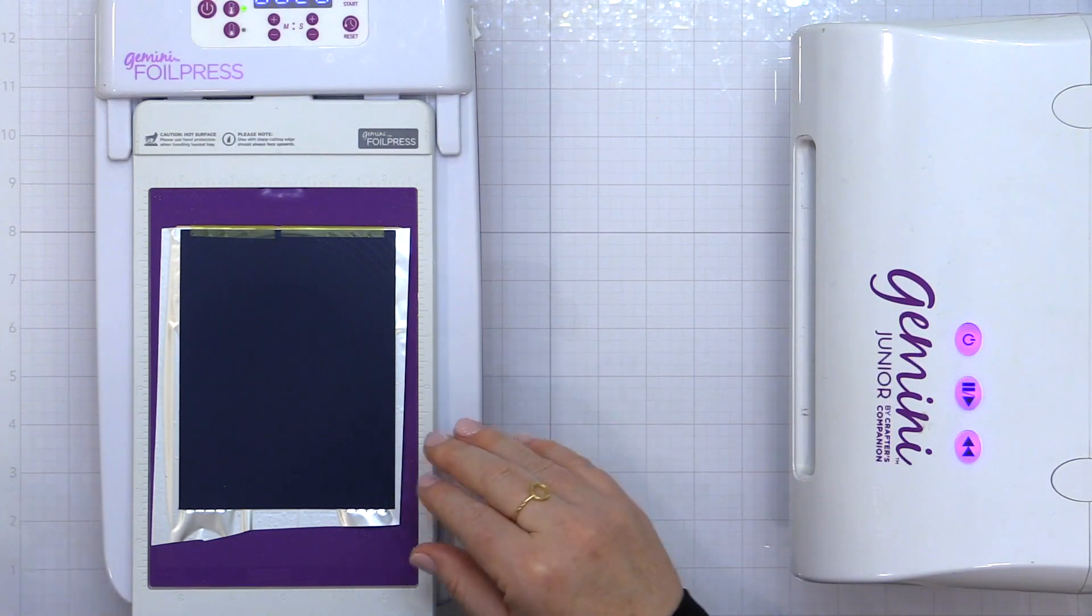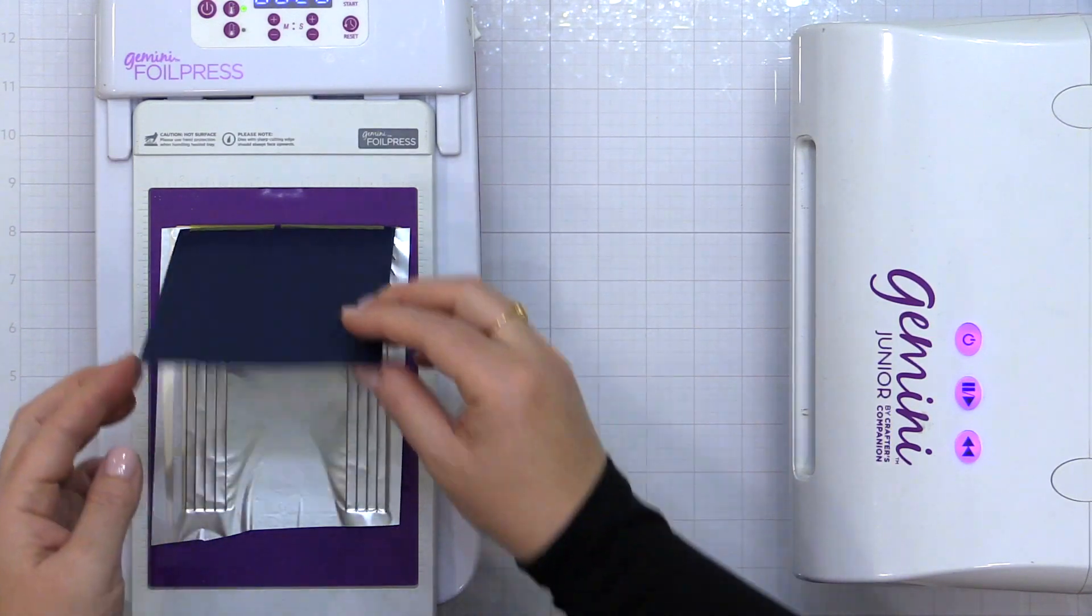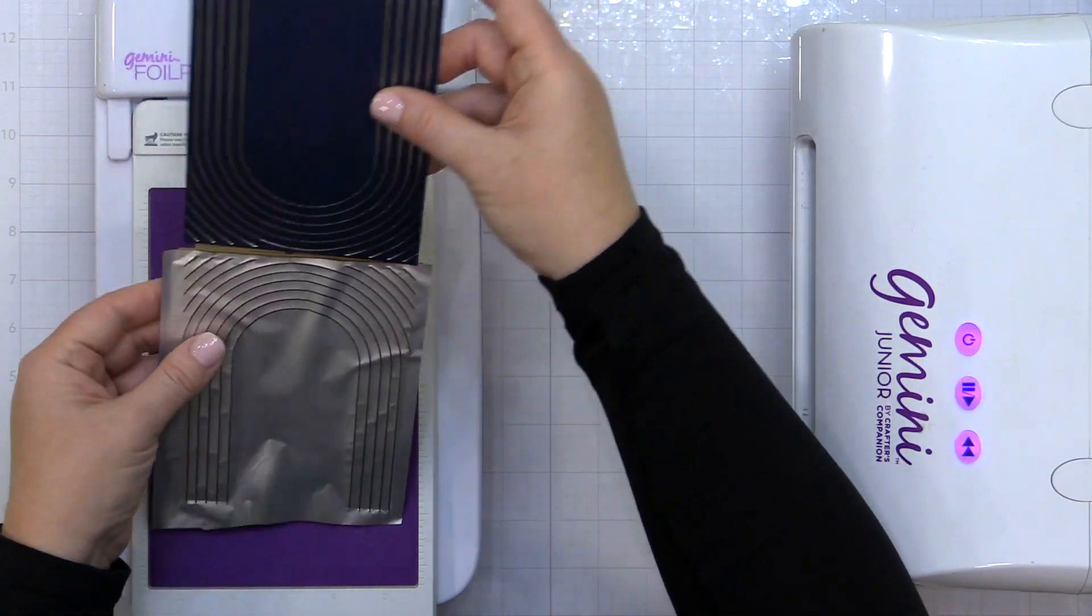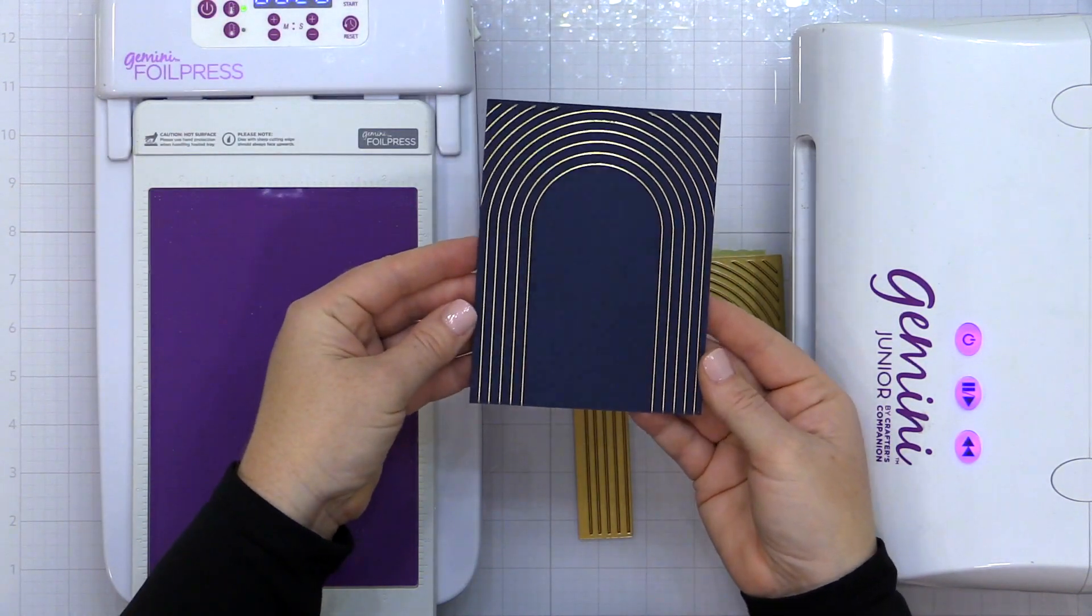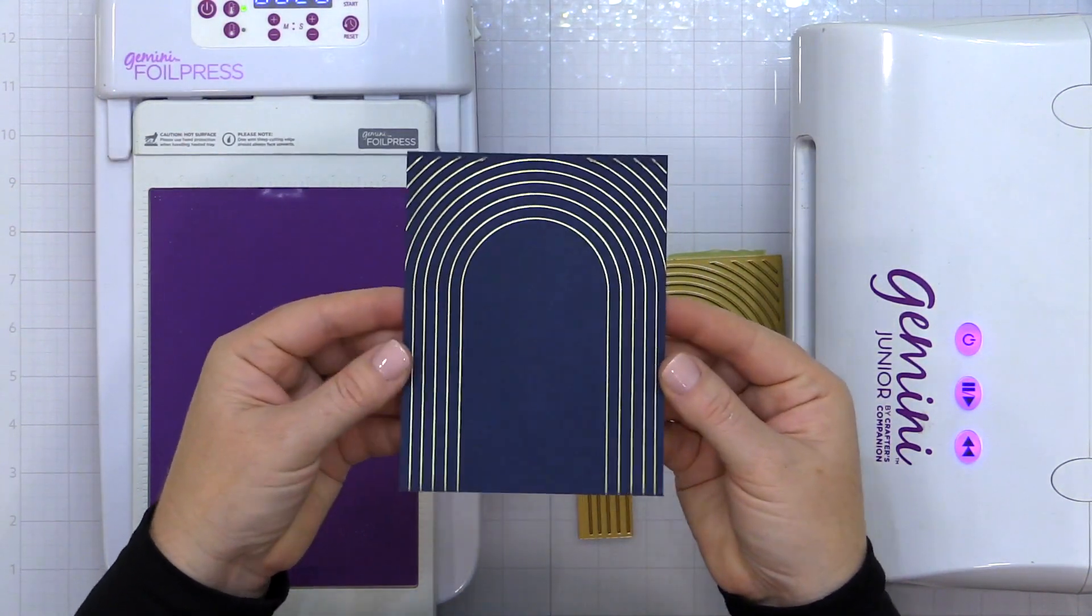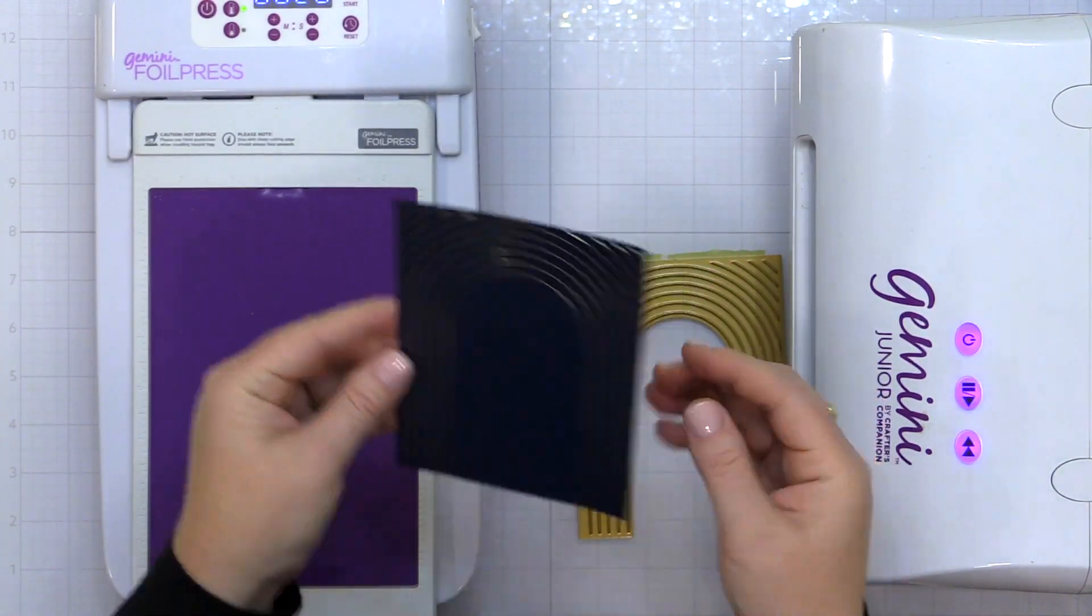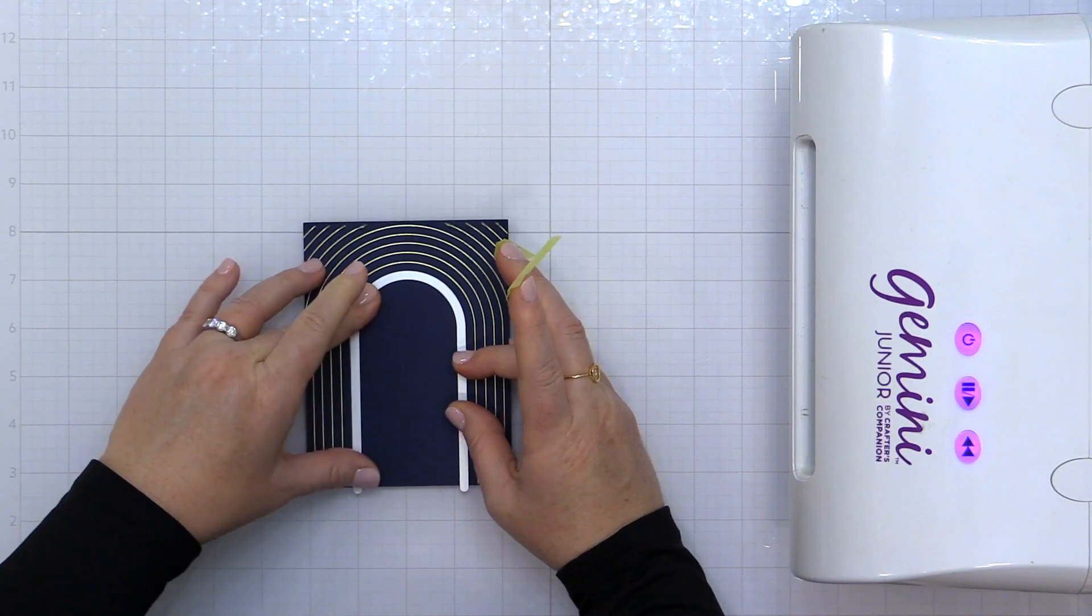So this hinge technique kind of gives you that benefit. It's kind of almost like when you use your MISTI and you can stamp in the same place. Now be careful not to shift or kind of twist things. As long as you do that, you'll be able to foil in the exact same place. So here's a look at that final foiled result.